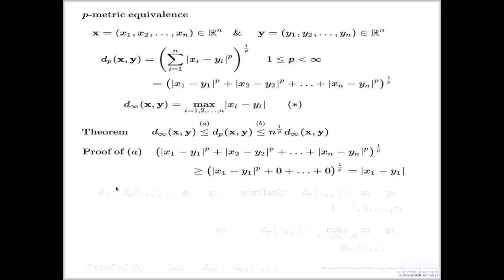So from here what I can say is that my dp metric for two points x and y, it is always greater or equal than the difference between the first two components, greater or equal than the difference of first components, I should say.